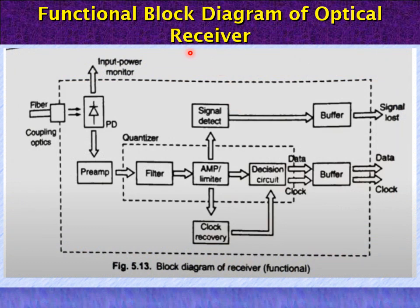Here we can see the functional block diagram of the optical receiver. The first section is the fiber, and the optical power is coupled to the receiver section. First it couples to the photodetector, then to the pre-amplifier, and then to the processing section, which contains the filter, amplifier, amplification limiter, decision circuit, signal detector, and clock recovery. Given to this section, it will synchronize the output signal and provide the final output.